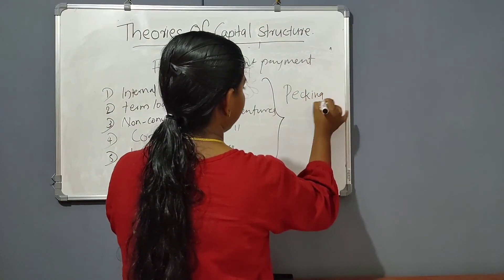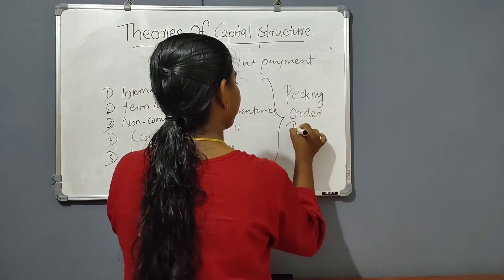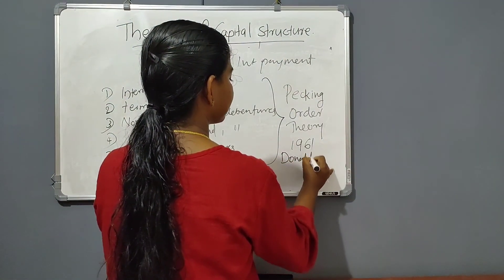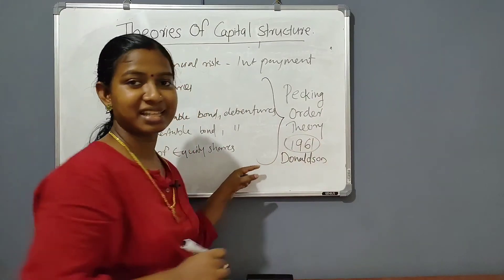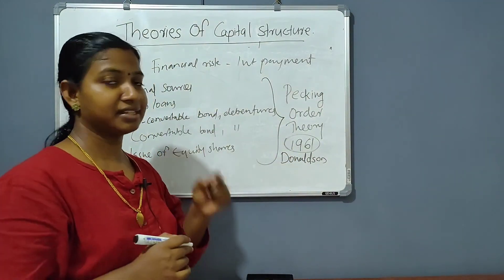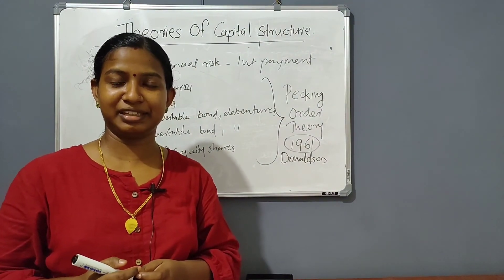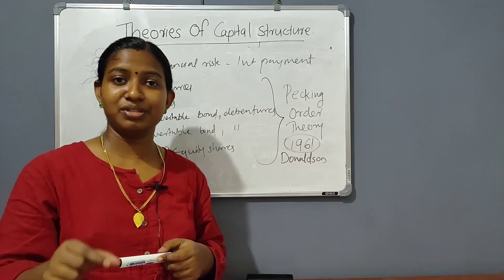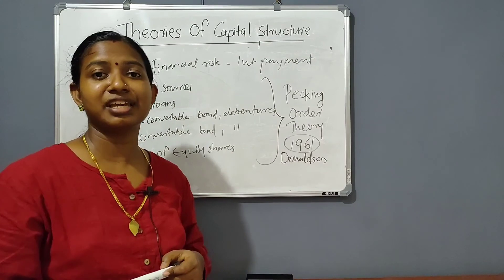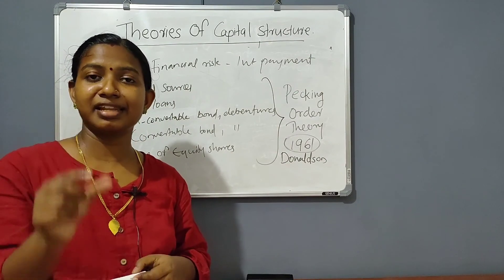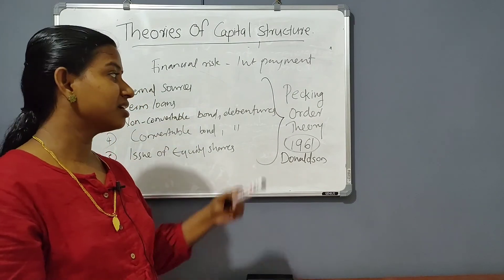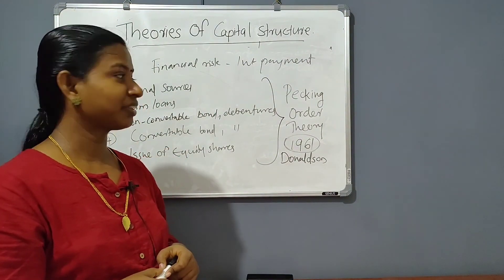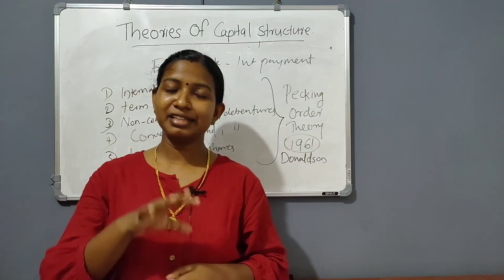This is the Pecking Order Theory. The Pecking Order Theory was developed by Donaldson in 1961. This theory explains the order of preference for sources of funds in a business organization. This is the main summary of the theories of capital structure.